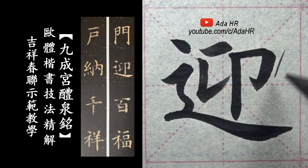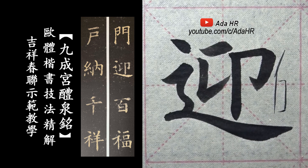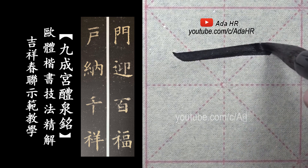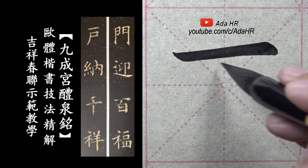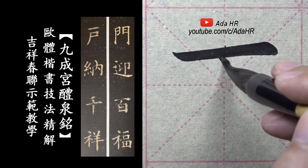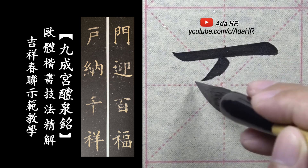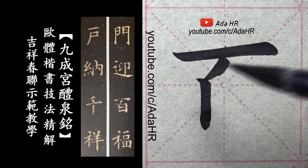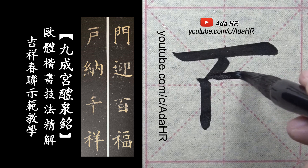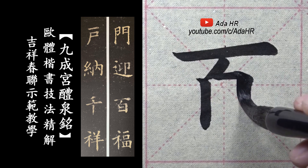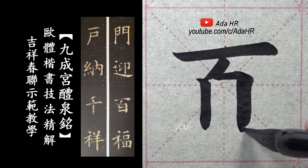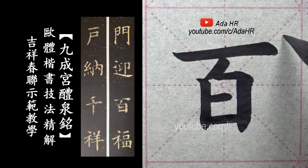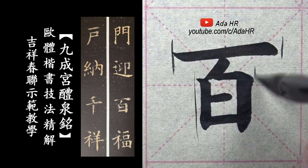把纸放在上面。横跨要长，撇在横跨中间，其次撇要短，竖画挡住撇，两竖粗细长短也有变化。横长一点，下面要窄一点，要留出空间。